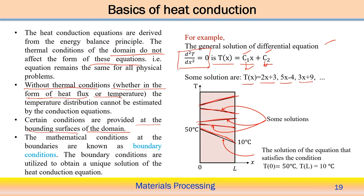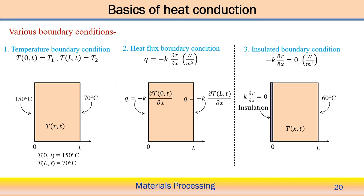The solution of the equation that satisfies the conditions — say T(0) = 50°C and T(L) = 10°C — if we define the boundary this way, then we get the unique solution of T(x). From these two points we can obtain C₁ and C₂ and get the unique solution for this particular condition. So if we solve the one-dimensional heat conduction equation d²T/dx² = 0, the temperature should vary linearly — that is the basic understanding from solving this equation.